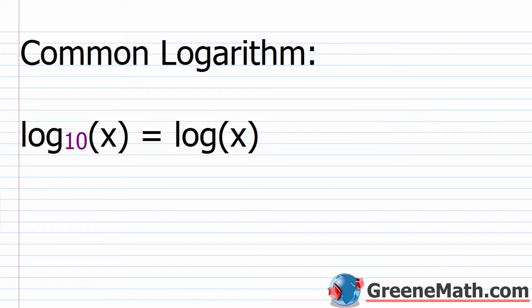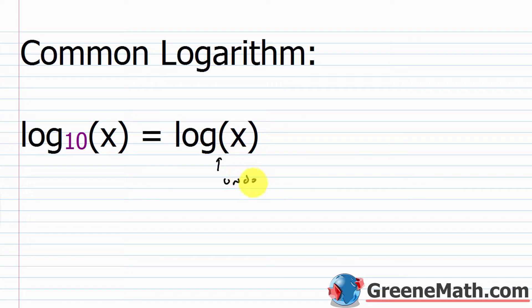So far, when we dealt with logarithms, if we came across a logarithm with a base of 10, we listed the base of 10 just like we would for any other logarithm. But there's a shortcut involved when you see a logarithm with a base of 10. A logarithm with a base of 10 is known as a common logarithm, because we have a base 10 number system. So we don't actually have to list the base.